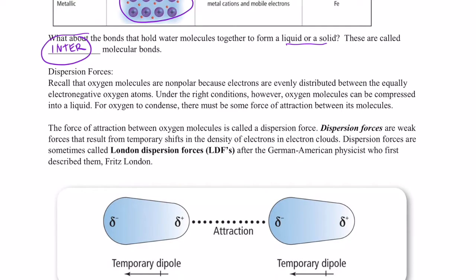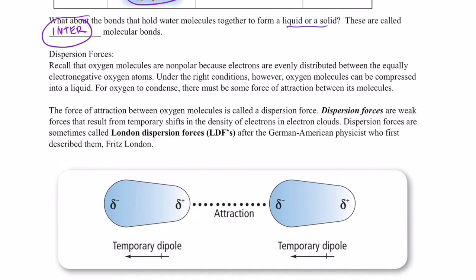Welcome back. We're going to continue our discussion related to intermolecular forces of attraction. Not too long ago we completed a unit where we drew Lewis structures and showed covalent bonding — that would be an example of intramolecular forces of attraction. Now we're talking about forces of attraction between molecules, and there are a few different types of forces we need to discuss.